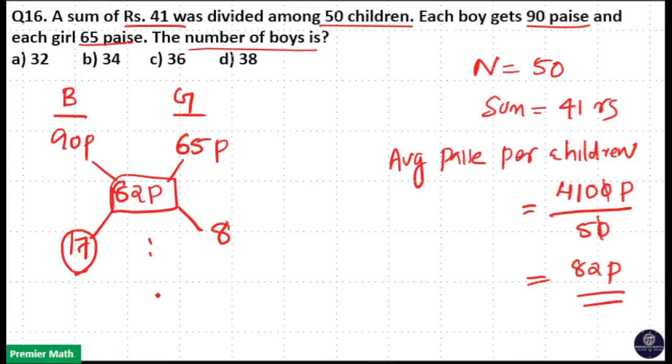17 out of the total number is 17 plus 8, which is 25, into the total number of students, which is 50. That means 25 into 2 equals 50, so 17 into 2 equals 34. 34 is the total number of boys. Option B is your answer.